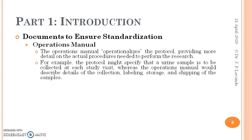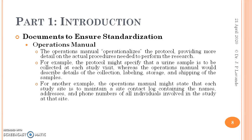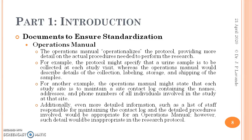The operations manual operationalizes the protocol by providing more detail on the actual procedures needed to perform in the research. For example, the protocol might specify that a urine sample is to be collected at each study visit, whereas the operations manual would describe details of the collection, labeling, storage, and shipping of the samples. The operations manual might also state that each study site is to maintain a site contact log containing names, addresses, and phone numbers of all individuals involved in the study. Additionally, more detailed information such as a list of staff responsible for maintaining the contact log would be appropriate for the operations manual, but such details would be inappropriate in the research protocol.